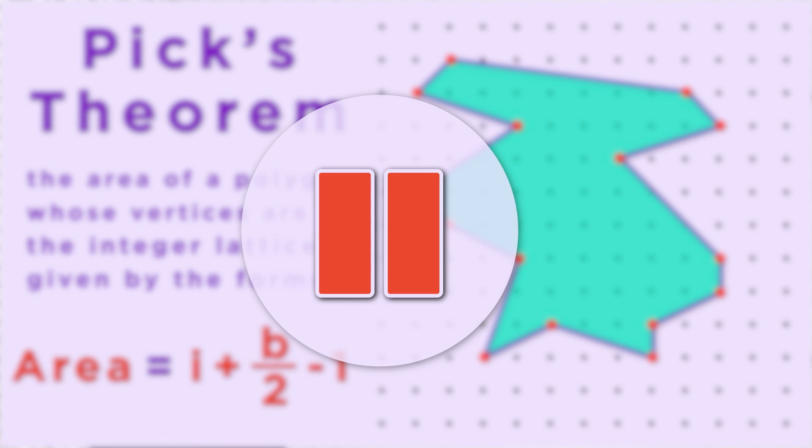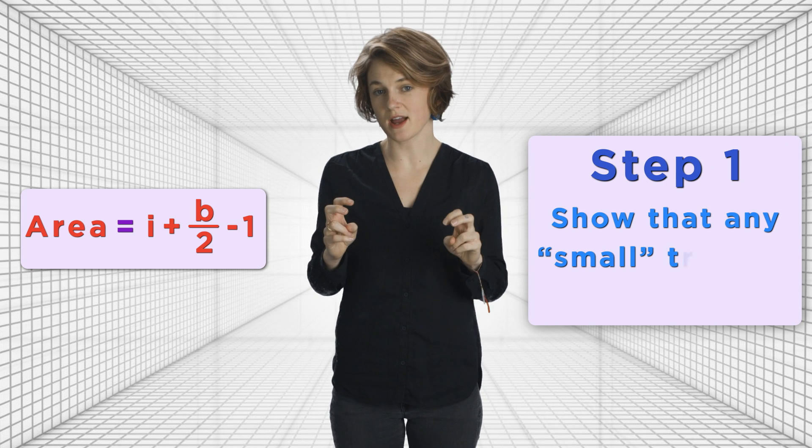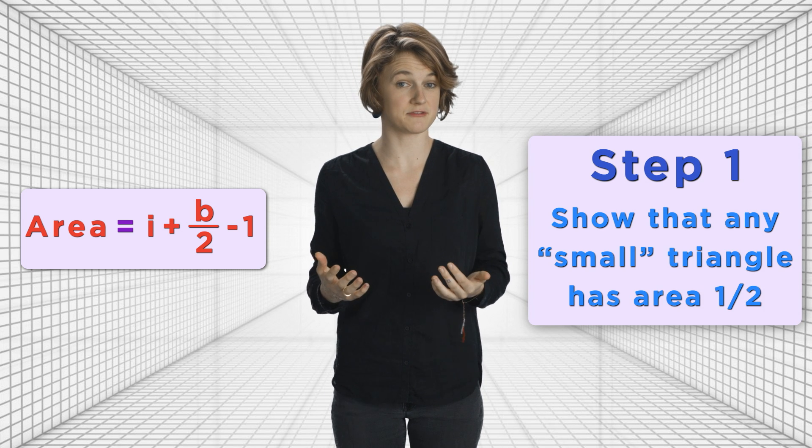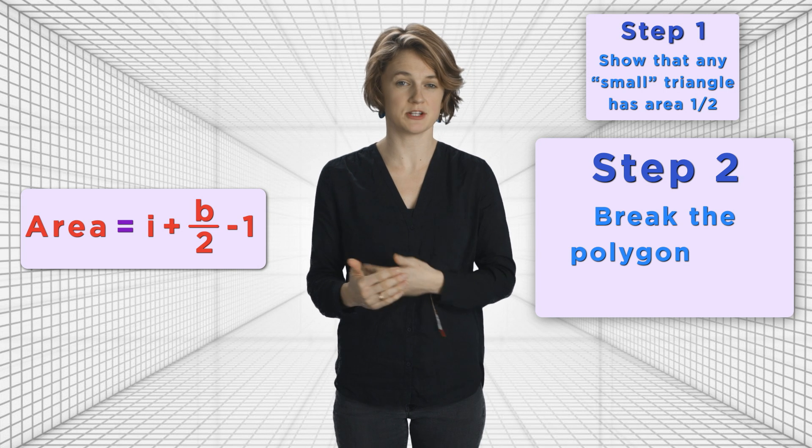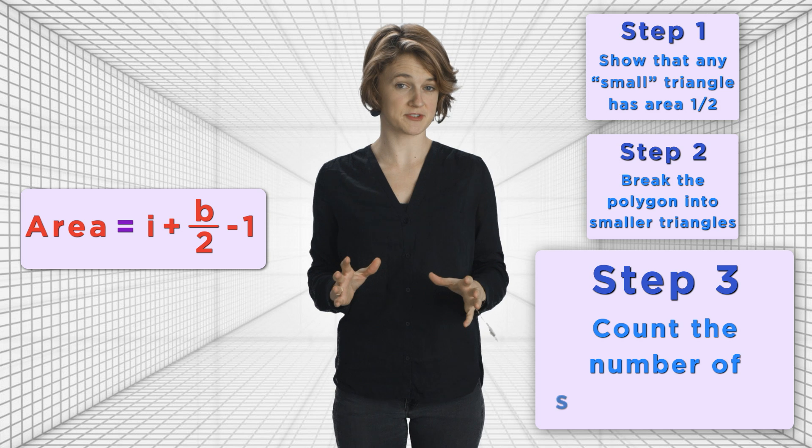You could pause here to verify it on some shapes that are easy to find the area of, like the rectangle, or try to prove it yourself. Now, what's the proof of Pick's theorem? In other words, how do we show that the area is I plus B divided by 2 minus 1? We'll break this down into three steps. Step 1, show that any small triangle has area 1 half. Step 2, break down our polygon into a bunch of small triangles. Step 3, count the number of small triangles.